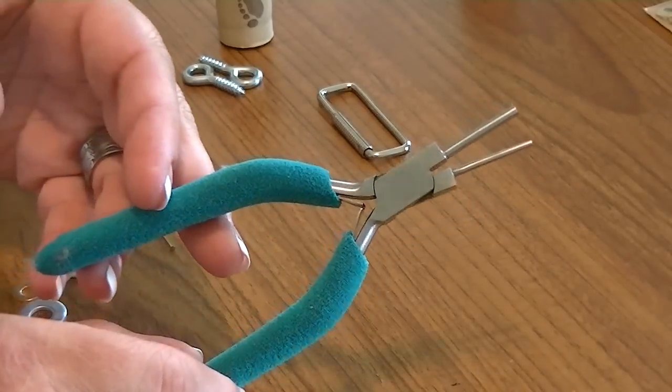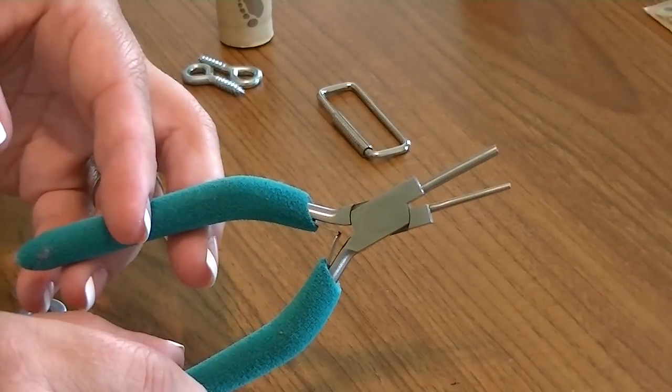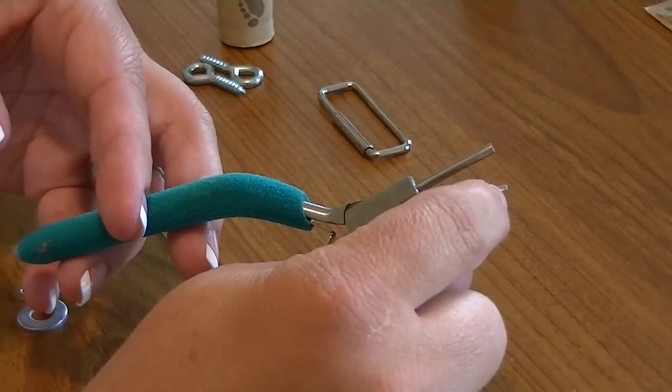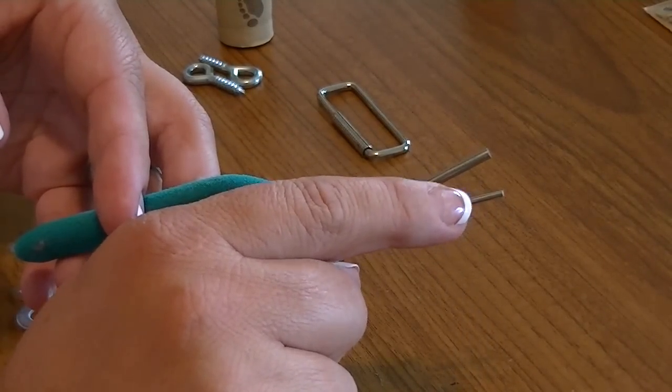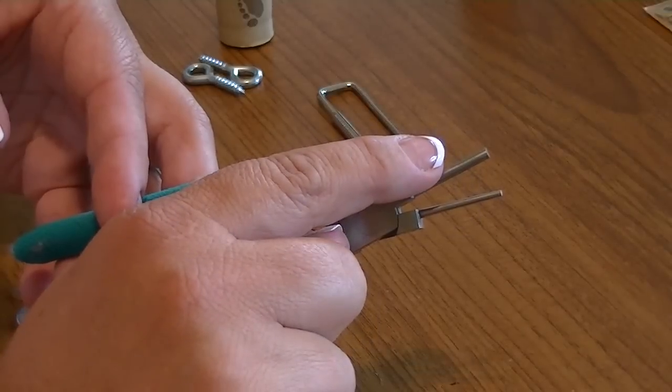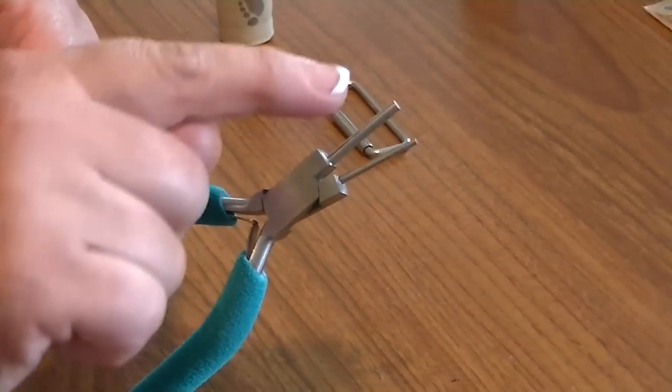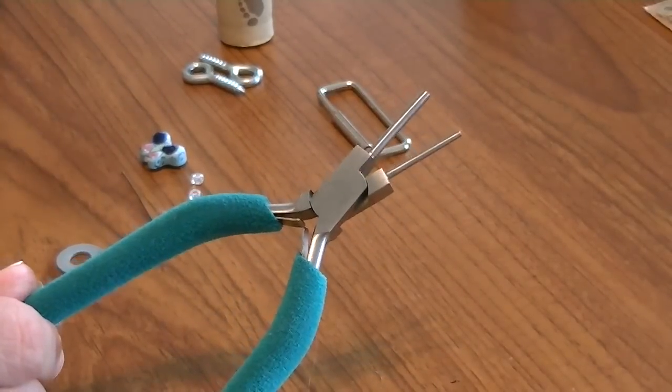These are for making jump rings and such. But you can also get the graduated pliers where it's skinnier at one end and then gets fatter, as opposed to here I have two unique sizes on each side of the plier. Either one doesn't matter, but you do want to have a larger round piece to make your charm with.